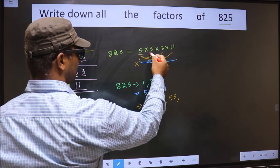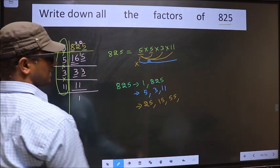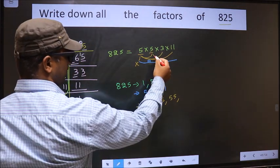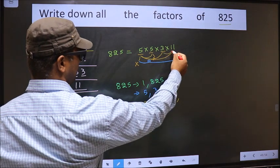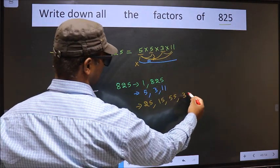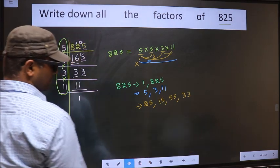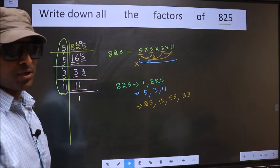Now you leave this 5, fix 5, you combine, you get the same numbers. So leave 5, fix 3, combine with 11. 3 into 11, 33. No other combinations possible.